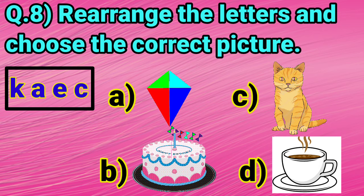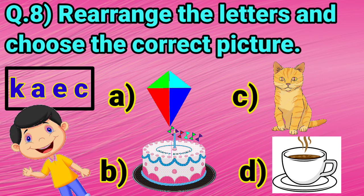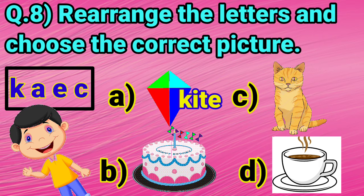Now, look at the options and tell me one by one that which picture do you see? Option A is a kite. Yes, we write K, I, T, E, kite.